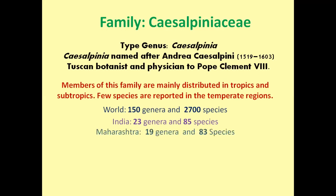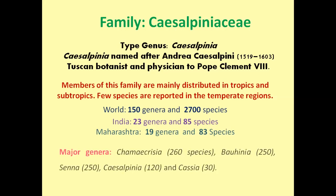In Maharashtra, it is represented by 90 genera and 83 species. The major genera of this family are Chamaecrista, Bauhinia, Senna, Caesalpinia, and Cassia.